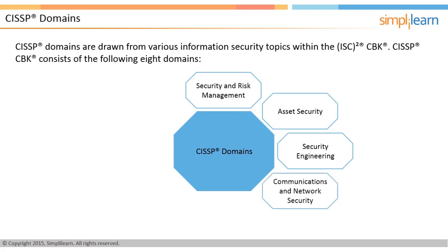Domain 4: Communications and Network Security. This domain discusses network structures, countermeasures, transmission methods, transport formats, and security measures used to provide availability, integrity, and confidentiality. Domain 5: Identity and Access Management. This domain includes physical and logical access control, identification, authentication, authorization, identity services, identity and access provisioning lifecycle, and attacks on access control and its countermeasures.